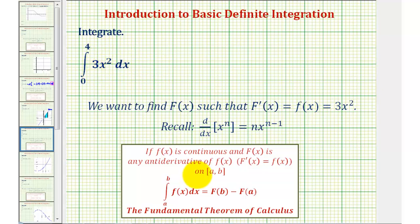We could use x to the third plus a constant, but notice how because of the subtraction here, the constant would simplify out, which means our integral is going to be equal to x to the third,